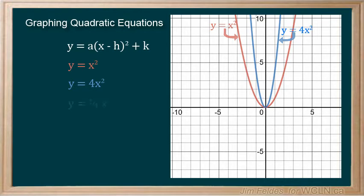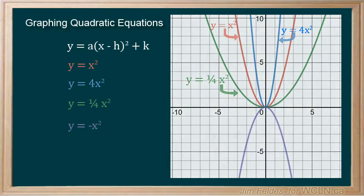If a is less than 1, like y equals 1 quarter x squared, the parabola flattens. And finally, a negative a inverts the parabola. Now, instead of a minimum vertex point, we get a maximum point.